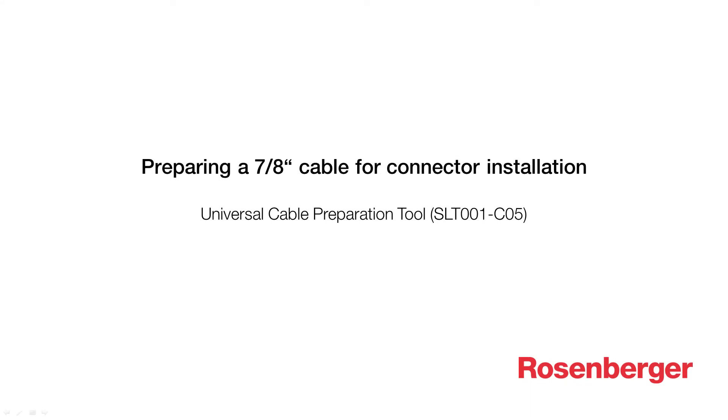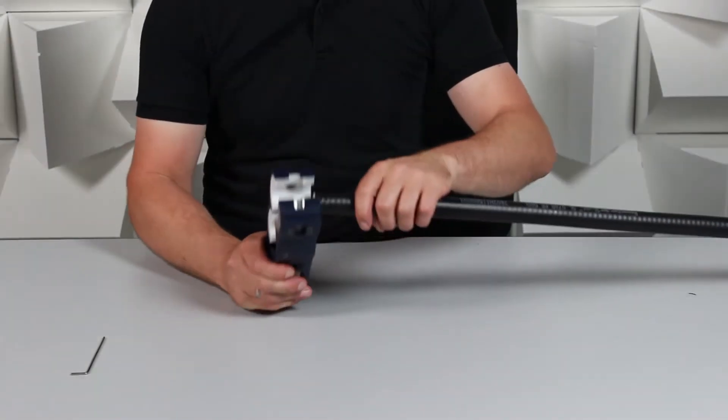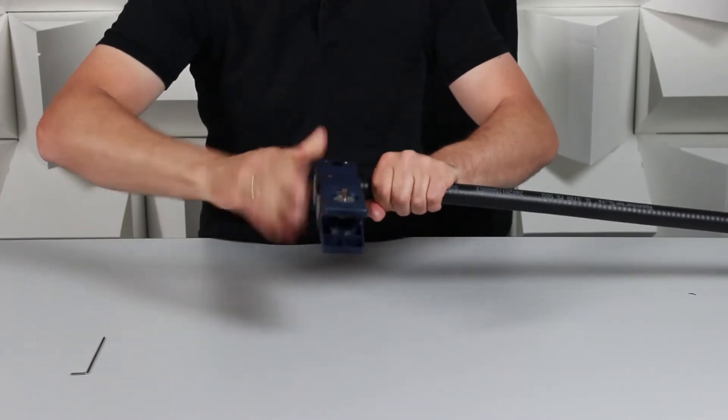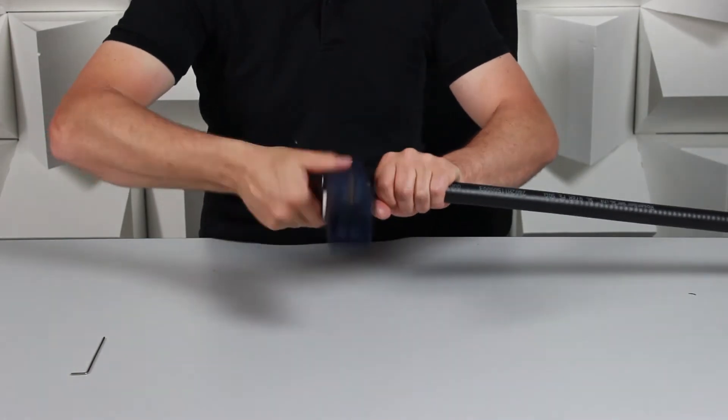We'd like to show you how to prepare a 7/8 cable for connector installation. Align the cable with the stripping blade like so, and then rotate the tool while applying light pressure.